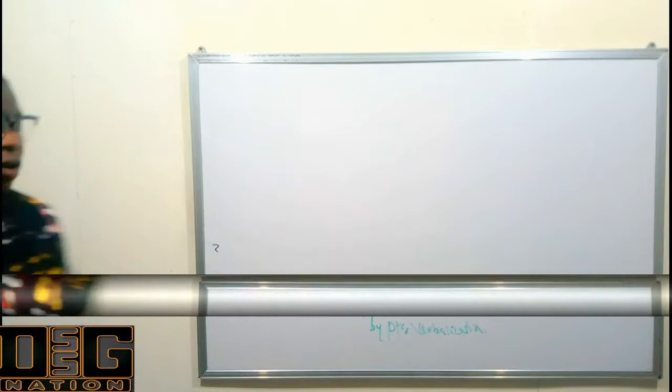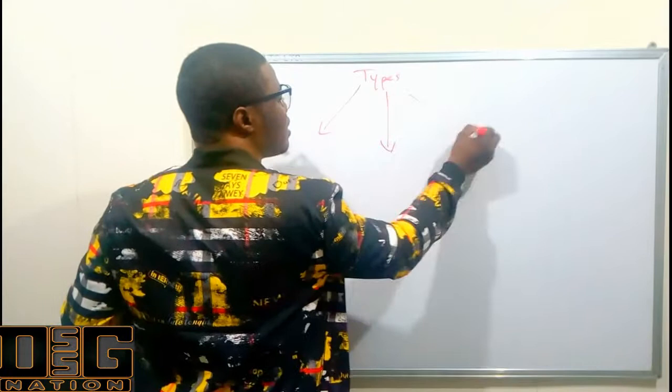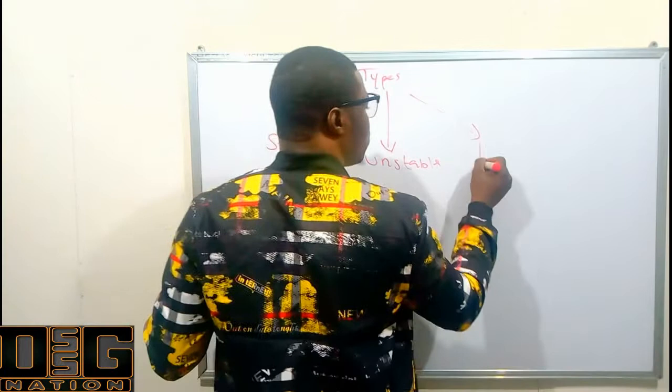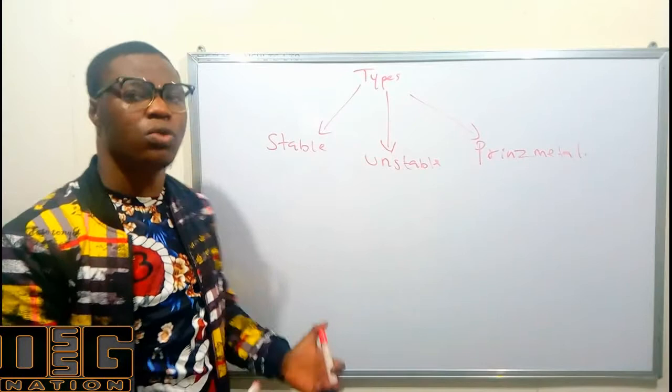Now let's talk about the types of angina pectoris. We have three major types: stable angina pectoris, unstable angina pectoris, and Prinzmetal angina pectoris.